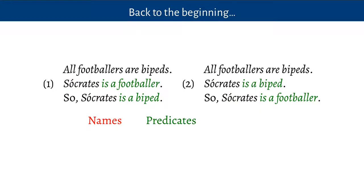The next thing in the argument is some predicates. We describe Socrates as being a footballer and as being a biped. A predicate is a description — it is true of some things, false of others. Some things are footballers, some things aren't. Some things are bipeds, some things aren't. Predicates describe things.